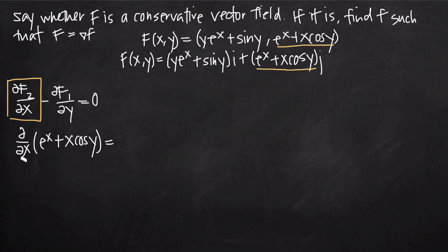Taking the partial derivative with respect to x of e to the x plus x cosine y: the derivative of e to the x is e to the x, and the derivative of x cosine y is just cosine y, because cosine y acts as a constant coefficient when we treat y as a constant. So we get e to the x plus cosine y.